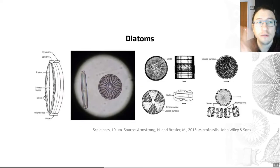As I mentioned, these organisms have two valves that fit together like differently-sized petri dishes. The larger is called the epitheca or epivalve, as you can see in this diagram, while the smaller is called the hypotheca or hypovalve, shown on the left-hand side.